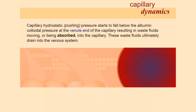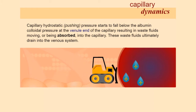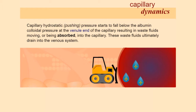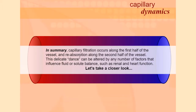Capillary hydrostatic pressure starts to fall below the albumin colloidal pressure at the venule end of the capillary, resulting in waste fluids moving or being absorbed into the capillary. These waste fluids ultimately drain into the venous system. In summary, capillary filtration occurs along the first half of the vessel and reabsorption along the second half of the vessel. This delicate balance can be altered by any number of factors that influence fluid or solute balance, such as renal and heart function.